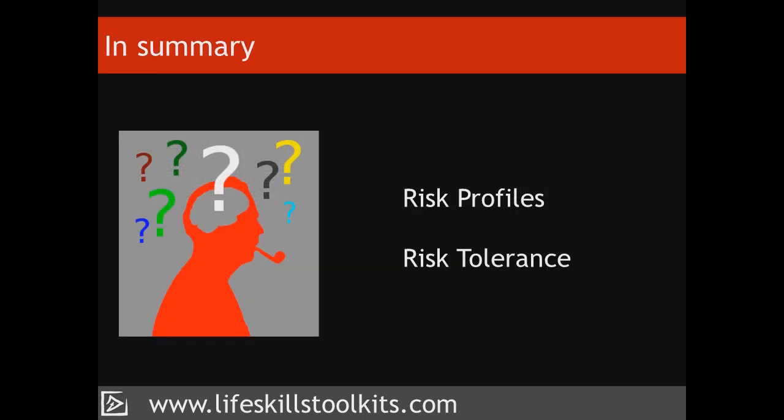Toolset two is all about making decisions in the face of uncertainty. Through the use of risk profiles, this toolset will help you to reduce the complexity that uncertainty brings and raise the odds of making a good decision. When a risk profile isn't enough, understanding your risk tolerance will help you to reach your decision.